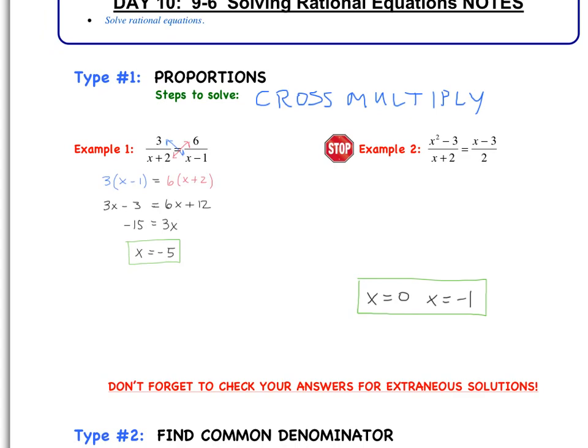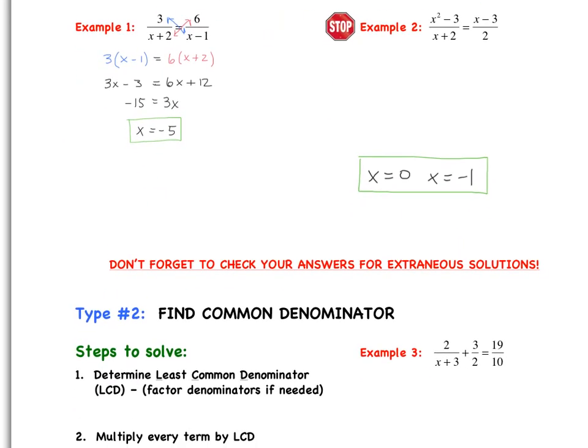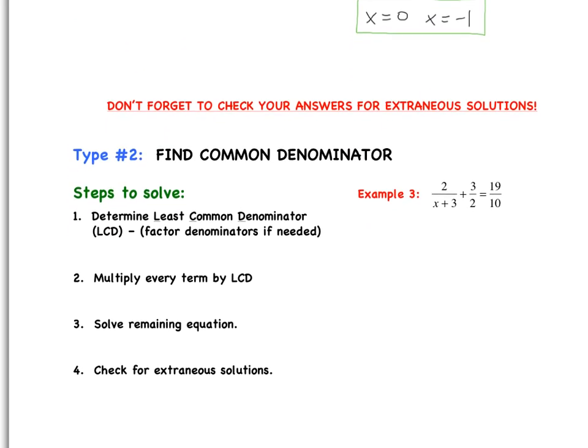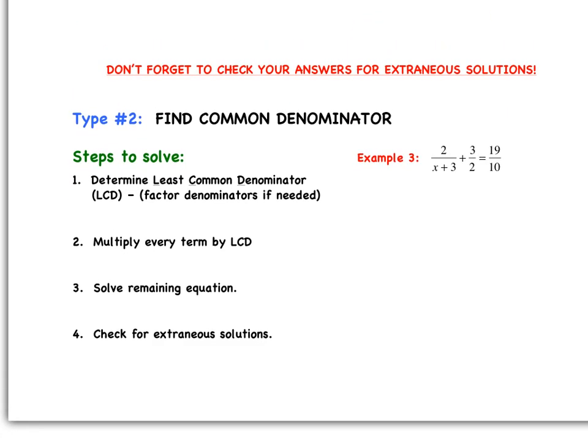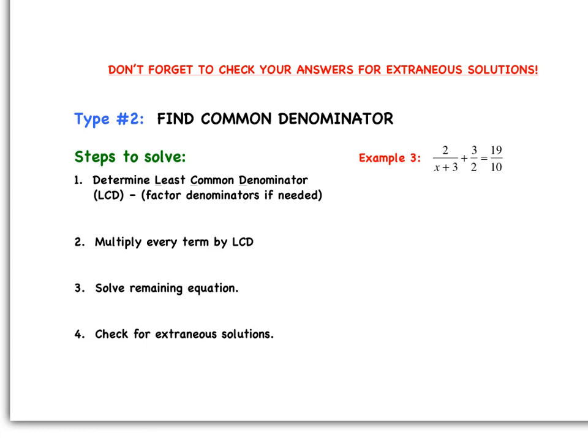So that's Type 1. Type 2, the other type of rational equation, requires us to find the LCD — the least common denominator. Then we multiply every term by this LCD to essentially eliminate the denominators, leaving a much nicer equation with no more fractions. The goal is to eliminate the denominators.